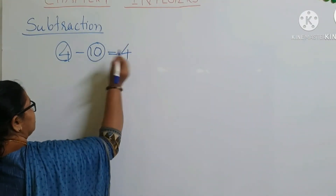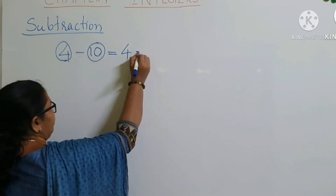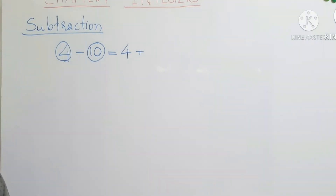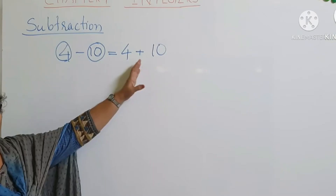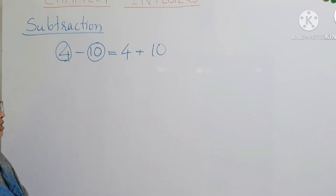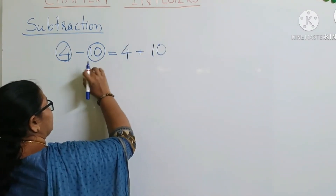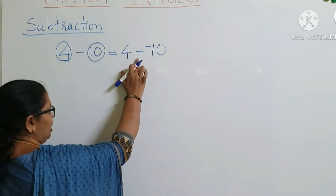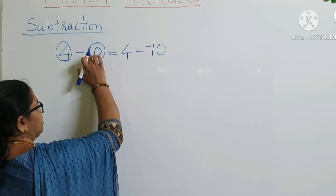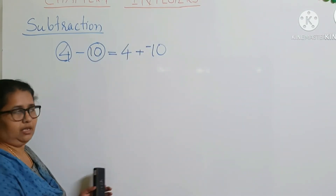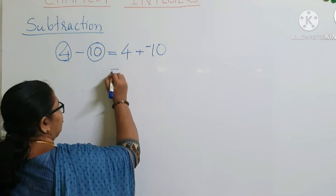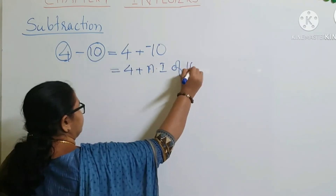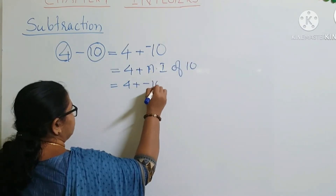We take 4, and the subtraction minus is changed to addition plus. Then the 10 being subtracted is changed to its additive inverse, minus 10. So 4 minus 10 becomes 4 plus minus 10.